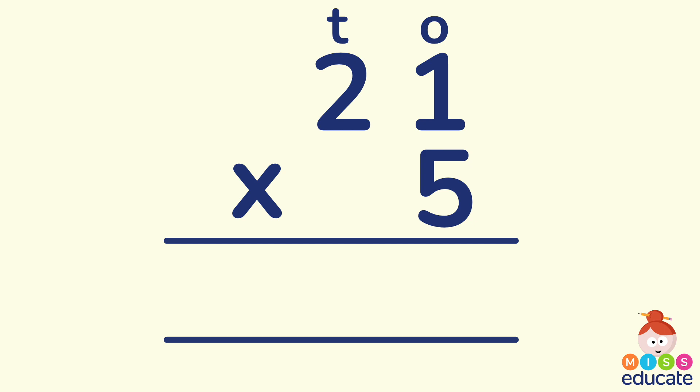So how do we start working out the answer to this question? We begin always with the ones. This is exactly the same as you do with your column subtraction and column addition. You always start with the ones column. So the first sum there is very simple because we are working out just what 1 times 5 is. And of course we know that 1 times 5 is 5. That 5 will be placed underneath the 1 and the 5. There it is underneath.